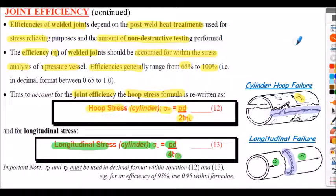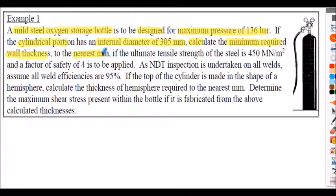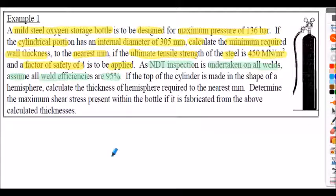Example 1: A mild steel oxygen storage bottle is to be designed for a maximum pressure of 136 bar. The cylindrical portion has an internal diameter of 305 mm. Calculate the minimum required wall thickness to the nearest millimetre if the ultimate tensile strength of the steel is 450 MN/m², a factor of safety of 4 is applied, and non-destructive inspection gives weld efficiencies of 95% in both directions. The top of the cylinder is made in the shape of a hemisphere — calculate its thickness too.